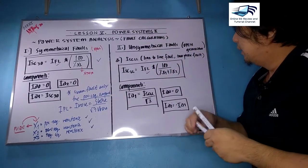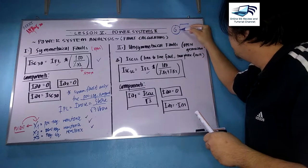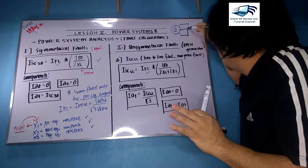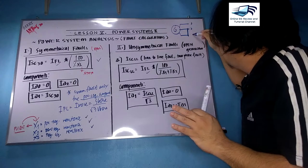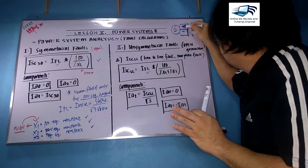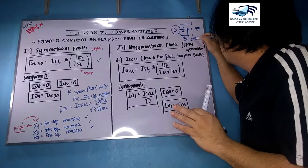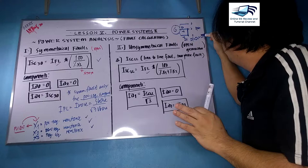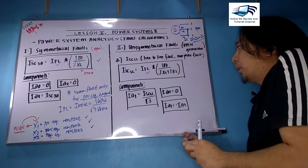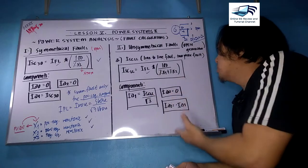For a line-to-line fault, if you have a generator with phases A, B, and C, with A open, you short-circuit B and C. The fault current is derived here which is equal to IB, which is the negative of IC. So ISC line-to-line is a line-to-line fault, sometimes called a two-phase fault.